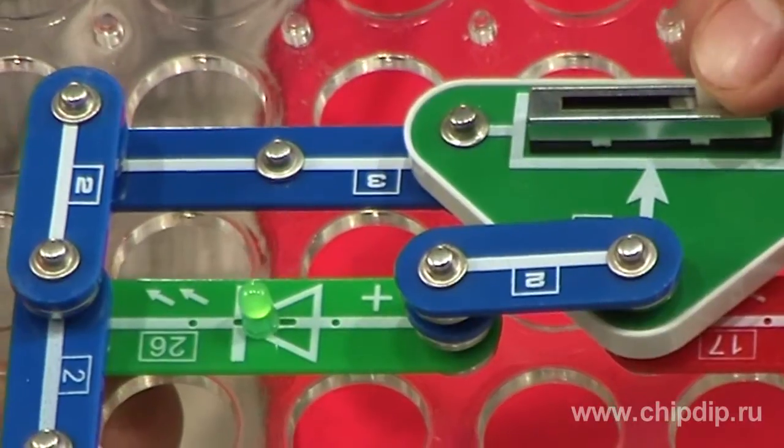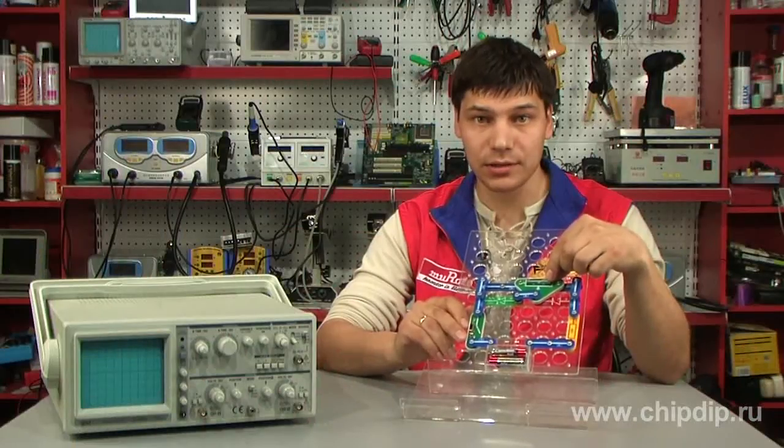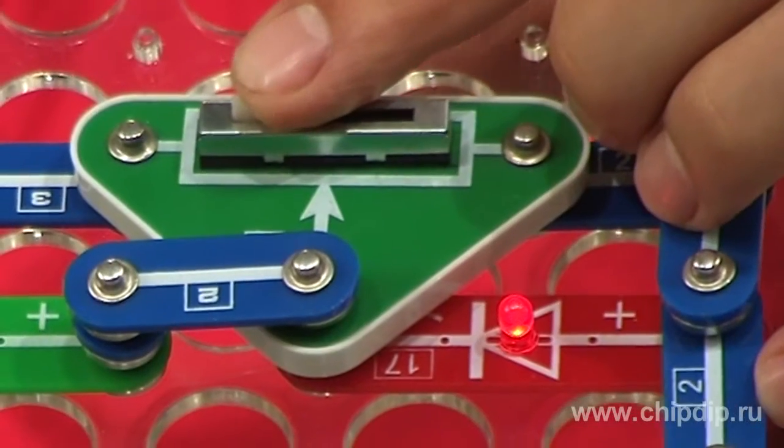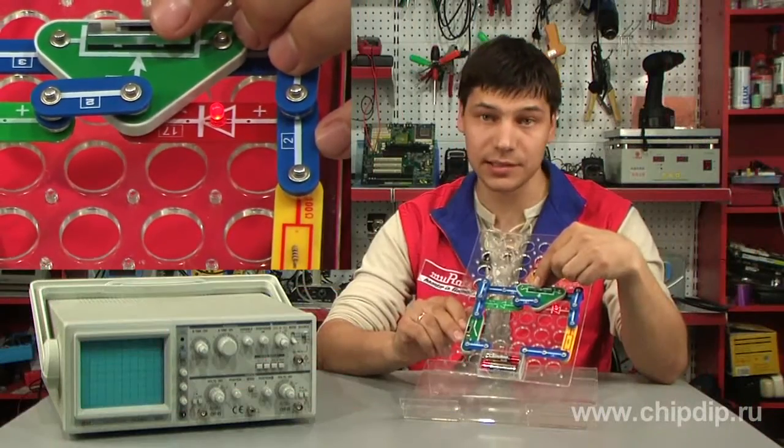In the extreme low position of the sliding contact, the resistance becomes zero in the point BC and the red LED lights, while the green LED goes out.